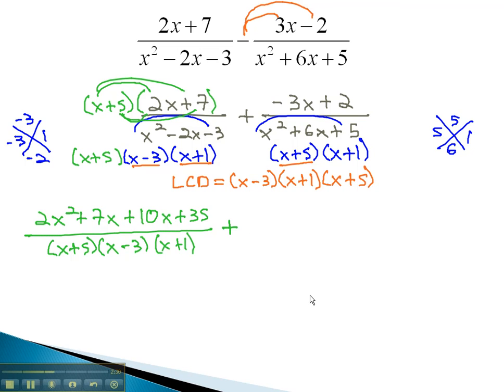Plus, our second denominator is missing the factor x minus 3. So, we will multiply the numerator and denominator by that missing factor. Again, we will need to put it in parentheses.